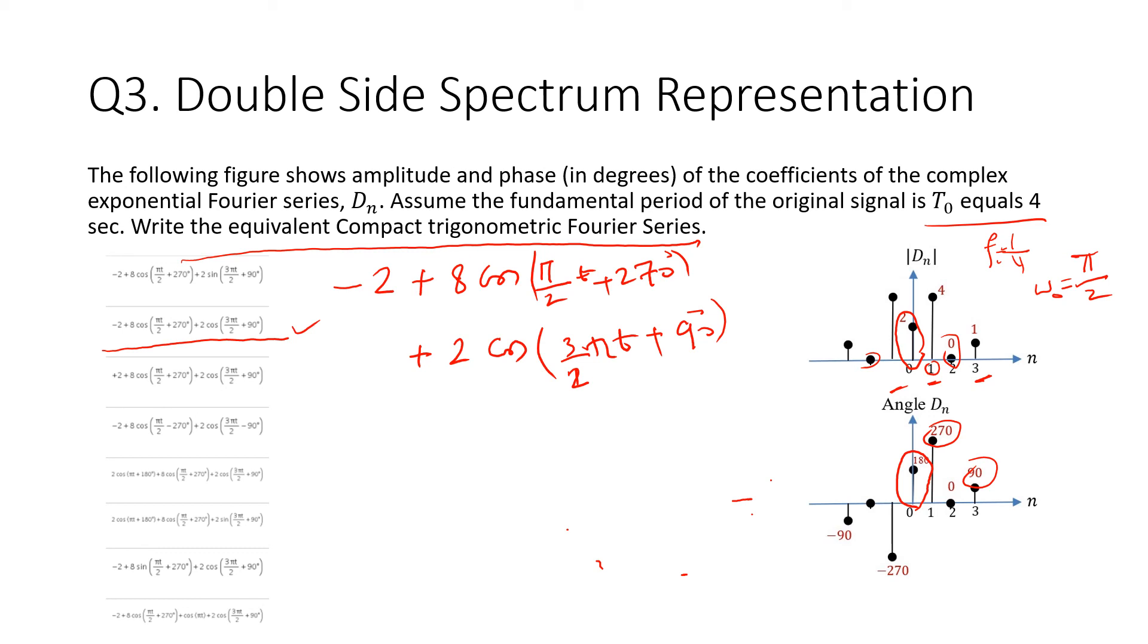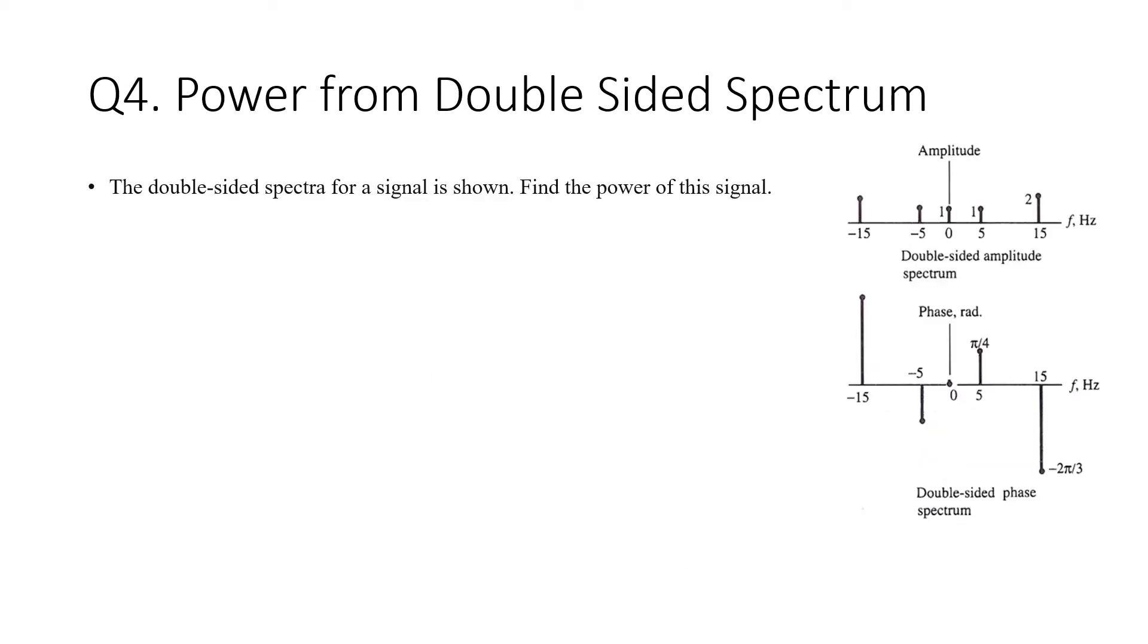Moving to the last question. It says the power from the double-sided spectrum. The double-sided spectrum for the signal is shown in the figure. Find the power of the signal.